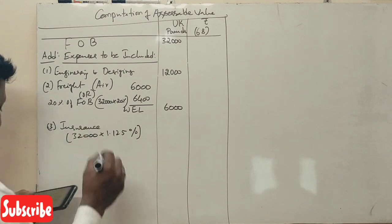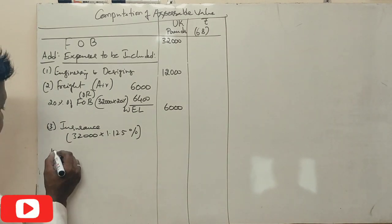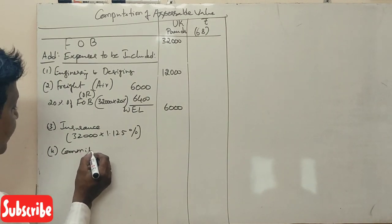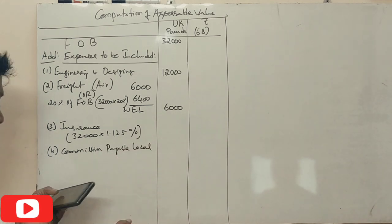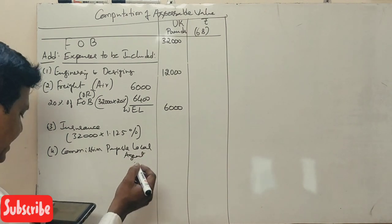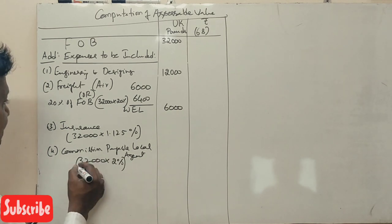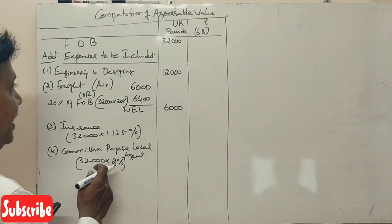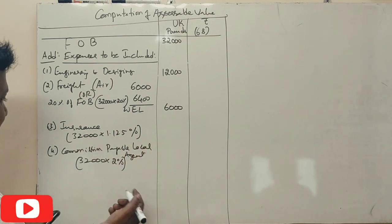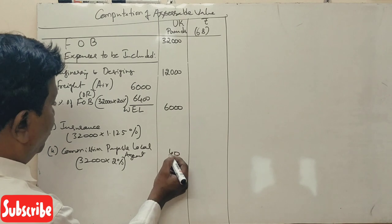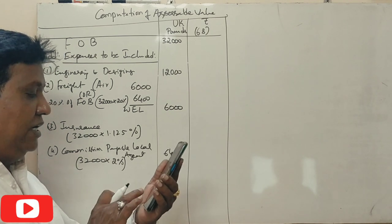Insurance not known, so FOB 32,000 into 1.125%. Commission payable to local agent 2% on FOB, 32,000 pounds, 2% in Indian rupees. Convert.